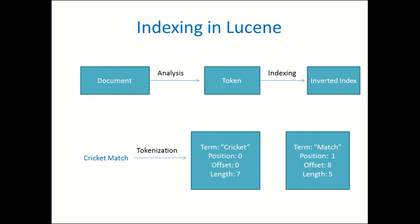Here is an example for tokenization. 'Cricket match' is the string and it is tokenized into two term vectors. Position, term, and length are pretty straightforward fields. The offset for 'cricket' is zero because 'C' is positioned at the zeroth index in the entire string, and 'M' is positioned at the eighth index, so the offset for 'match' is eight.